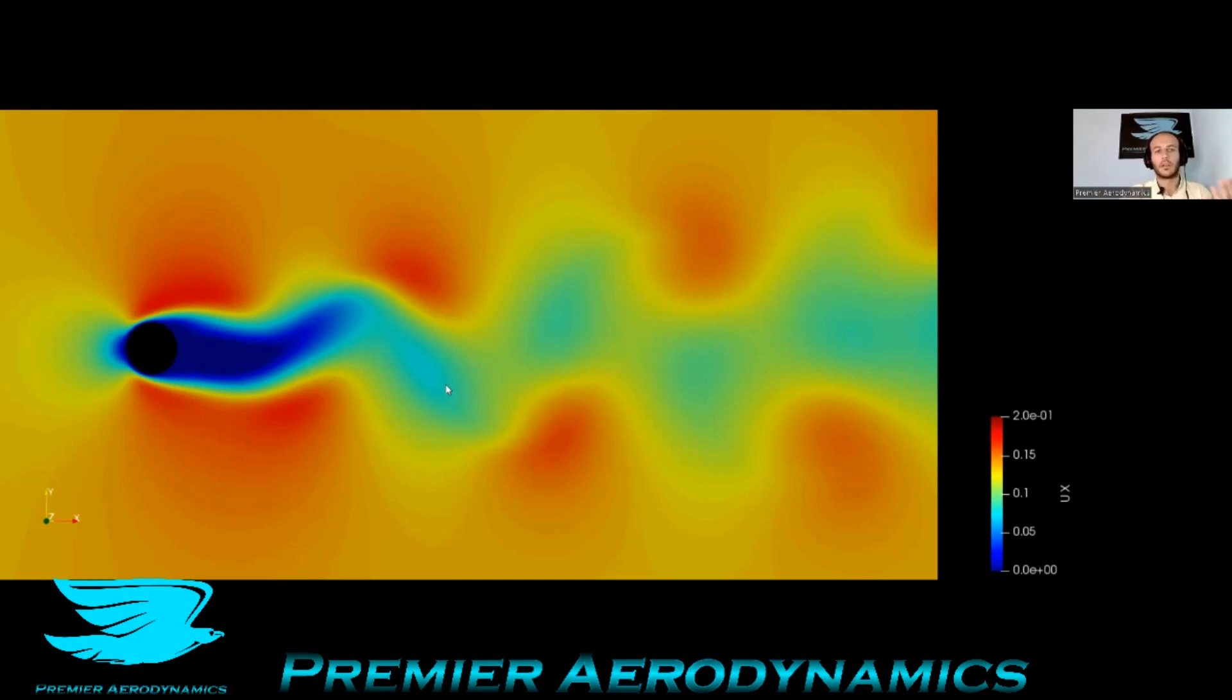And then downstream, you see where these vortices have these low velocity regions. And the wake here is in dark blue, that's very low velocity, and you see it wheeling back and forth.